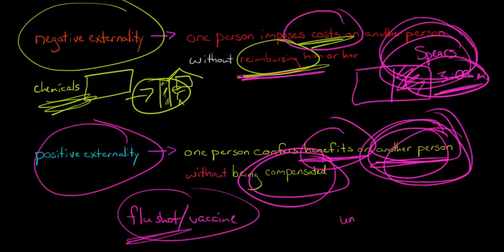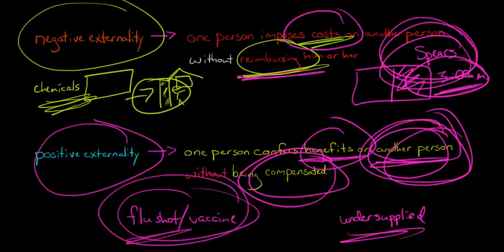Basically things where there's a positive externality, the good is going to be undersupplied. Because if you were actually paid, if people said, hey, I really like what you did, and then you reap the full social benefit for what you did, you might be more likely to get a flu shot.